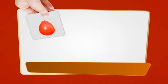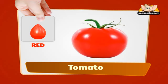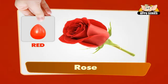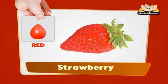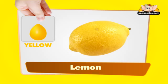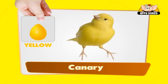Colors. The color red. Examples: a red tomato, a red rose, a red strawberry. The color yellow. A yellow lemon, a yellow canary.